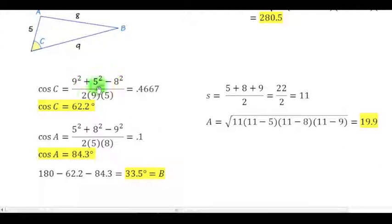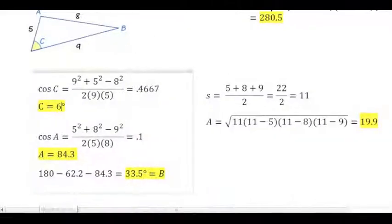Get that value and I take the inverse cosine of .4667. When I do the inverse cosine, oops, that should be not cos of c, but actually c. Okay, so now you can see the correct answer. c equals 62.2, a equals 84.3 degrees.